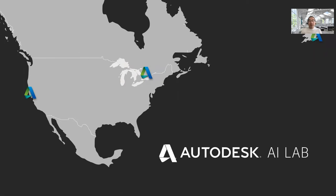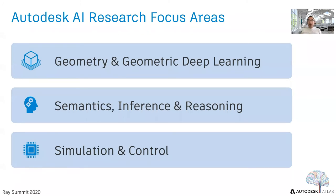For the AI Lab, we currently have 15 people located in three different locations: San Francisco, US; Toronto, Canada; and London, UK — and it will keep growing. In Autodesk AI research, we focus on three areas: geometry and geometric deep learning; semantics, inference, and reasoning; and simulation control. The three projects I will share today fall into the simulation control area.